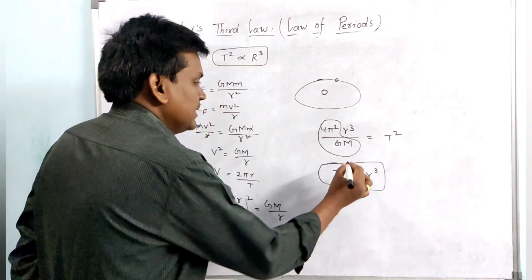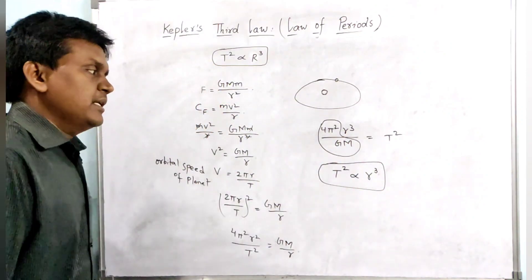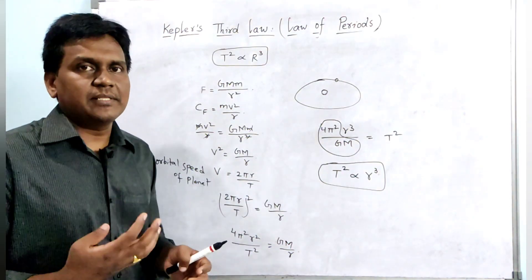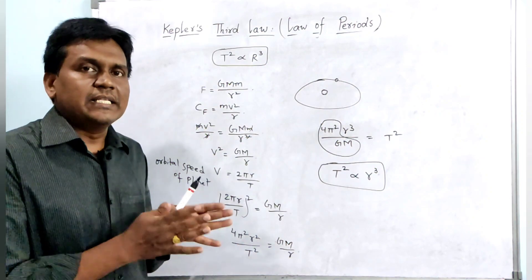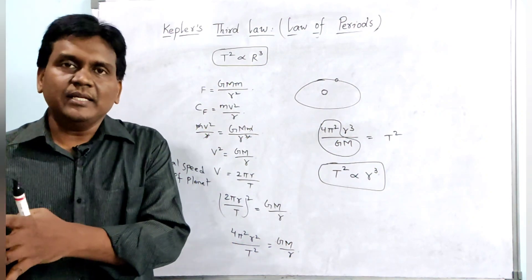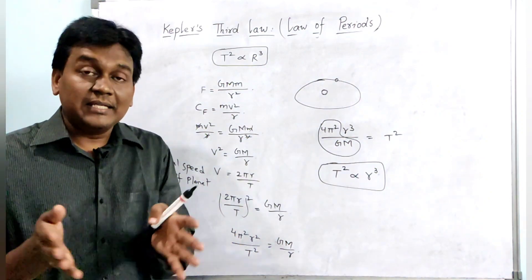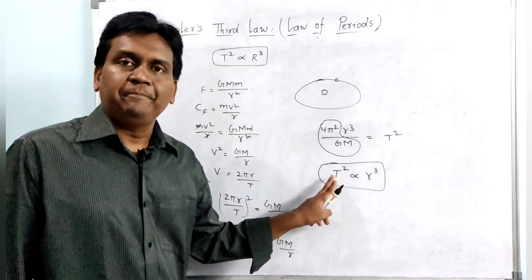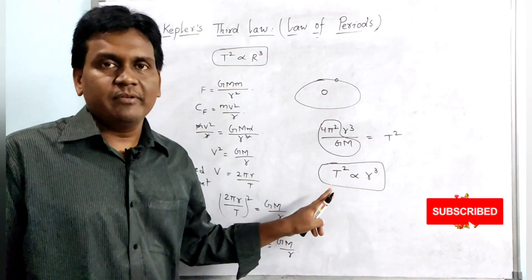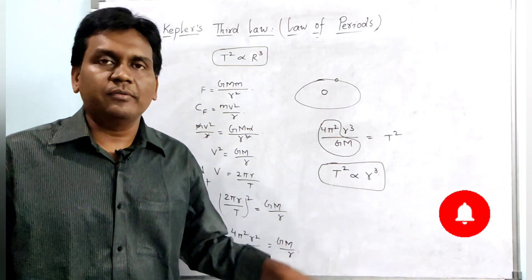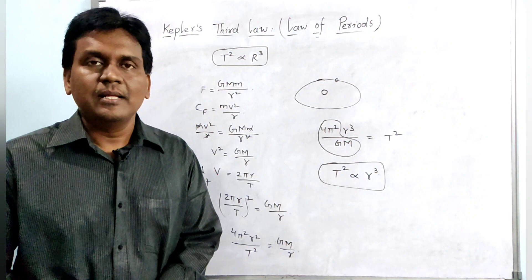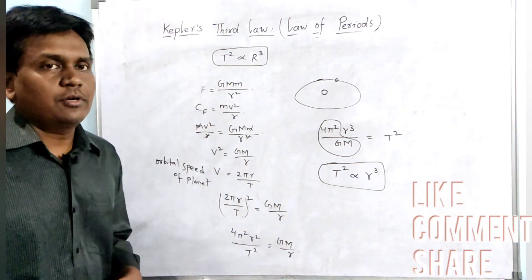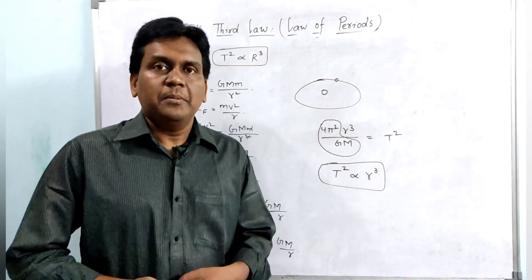So this confirms Kepler's third law: the square of the time period of the planet revolving around the sun is directly proportional to the cube of the distance between the sun and the planet. This is Kepler's third law, also called the Law of Periods.